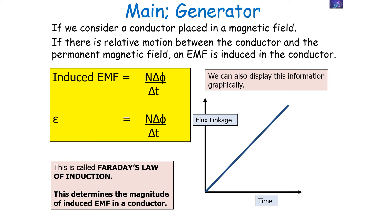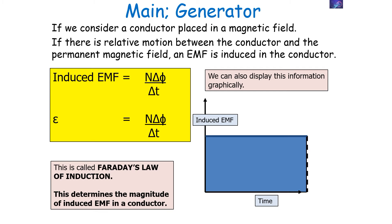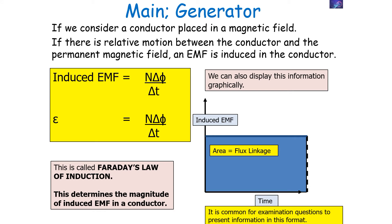We can also display this information graphically. If we plot the flux linkage on the y-axis and time on the x-axis, the gradient of this line will be the induced EMF — it's common for examination questions to present information in this format. Another graph we could draw has the induced EMF on the y-axis and time on the x-axis; in this situation, the area under the line is the flux linkage. Again, it's very common for examination questions to present information in this format.